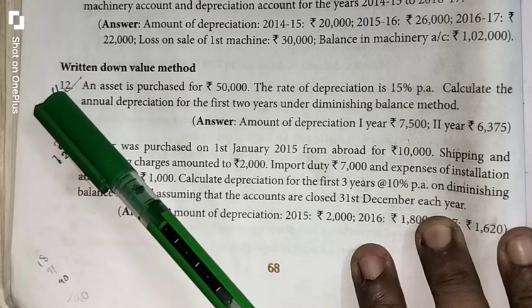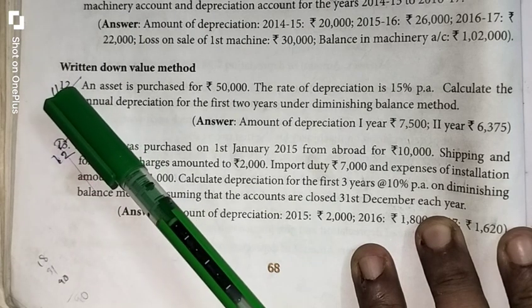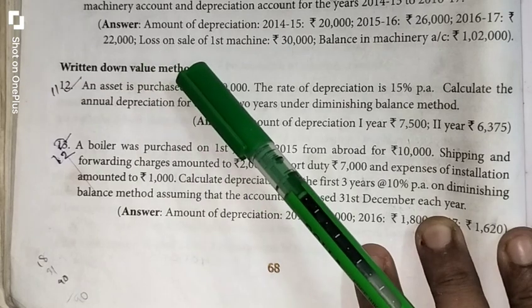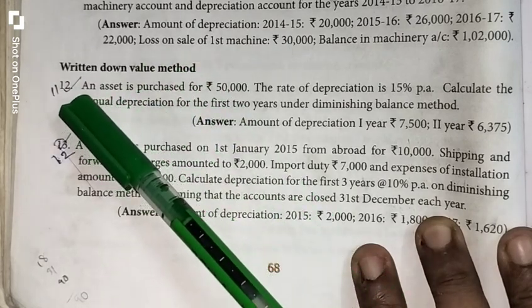Exercise Sum Number 11. We are going to learn about Written Down Value Method. Let's read the transaction that is asked.